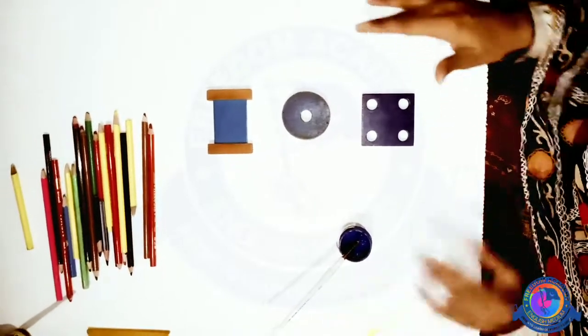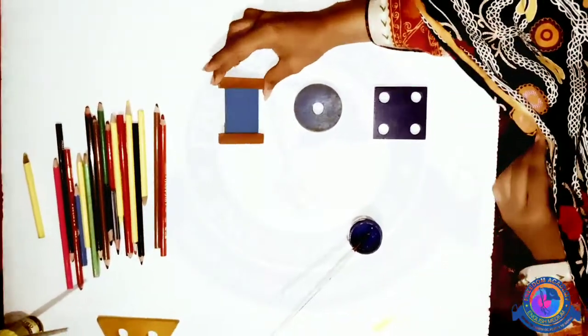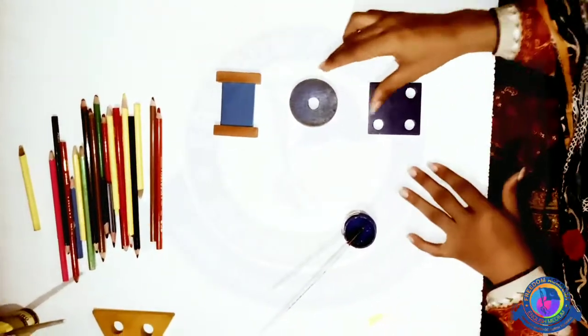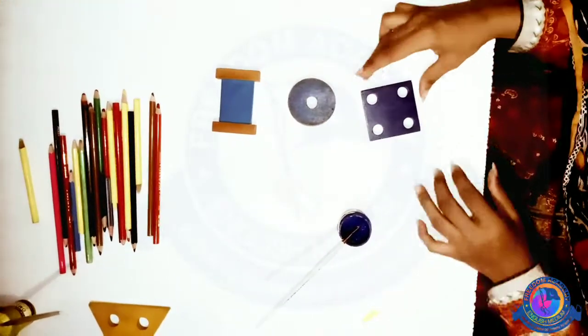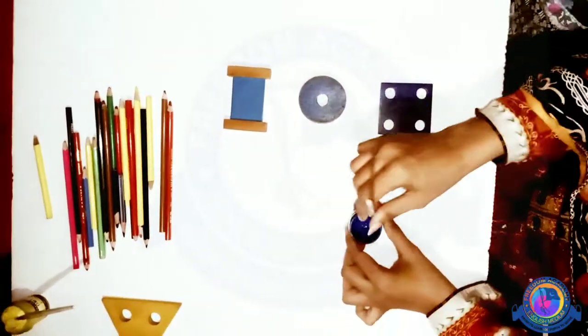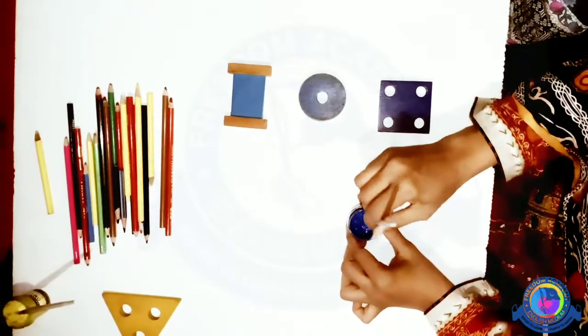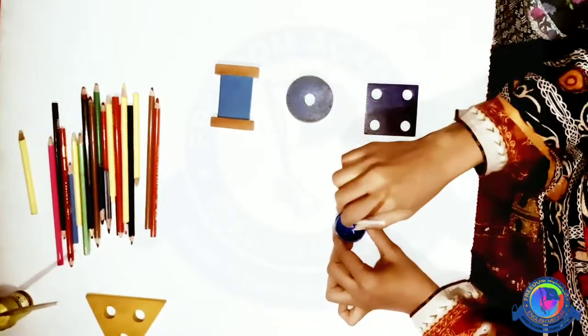Now we have a blue color, the blue color primary color. Here is the shape, the square. Now we paint the square with the blue primary color.